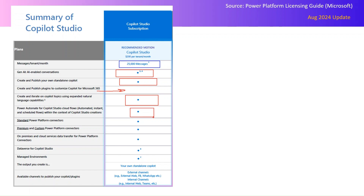With the subscription you also get Power Automate for Copilot Studio cloud flows — automated, instant, and scheduled flows — but only within the context of Copilot Studio. You also get standard and premium custom Power Platform connectors, on-premises and cloud service data transfer for Copilot Studio, and the ability to manage environments. The output is your own standalone copilot, which you can publish to channels like external web, Facebook, WhatsApp, Teams, and internal web.